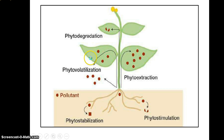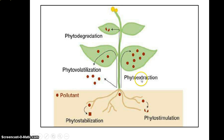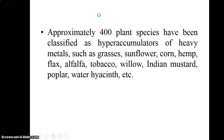In this diagram you can see the fate of the pollutant — the red dots, squares, or circles represent pollutants. In phytostabilization, the pollutant is converted into a more stable form. In phytoextraction, the pollutant is absorbed and accumulated into the leaf. In phytovolatilization, contaminants are released into the environment through the leaf. In phytodegradation, the pollutant is degraded into a less toxic form.